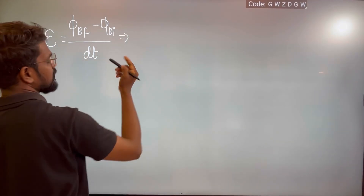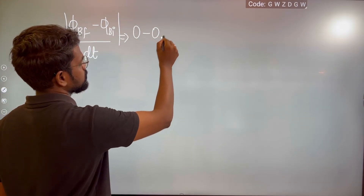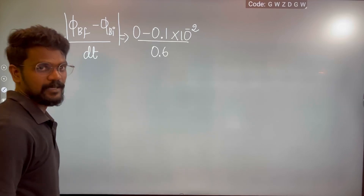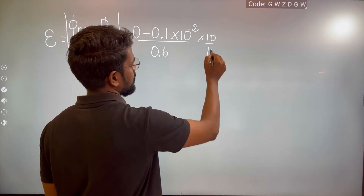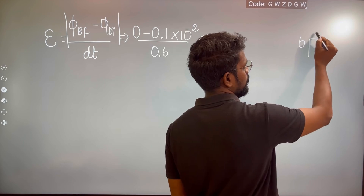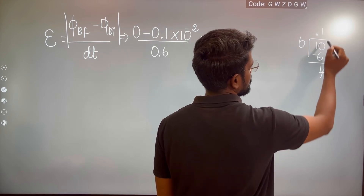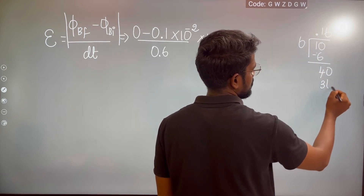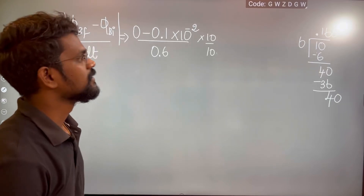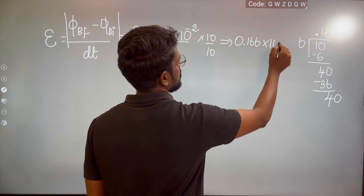So, final flux is 0 and the magnitude of initial flux is 10⁻² upon time 0.6 seconds. Multiplying and dividing, we get 0.166 × 10⁻².